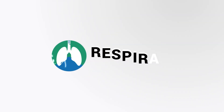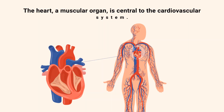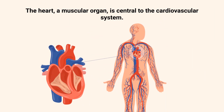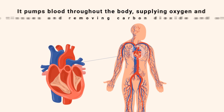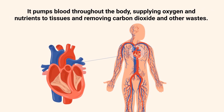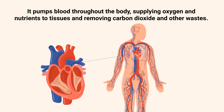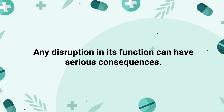So, if you're ready, let's get into it. The heart, a muscular organ, is central to the cardiovascular system. It pumps blood throughout the body, supplying oxygen and nutrients to tissues and removing carbon dioxide and other wastes. Any disruption in its function can have serious consequences.